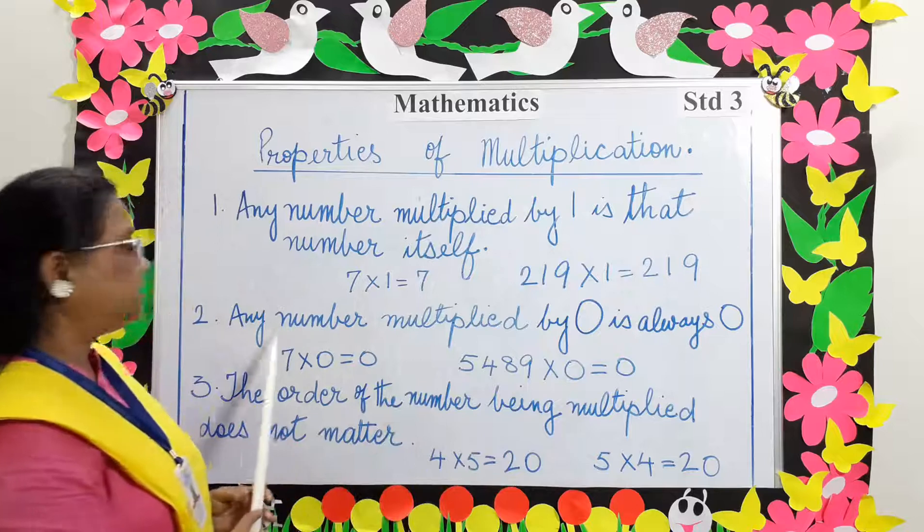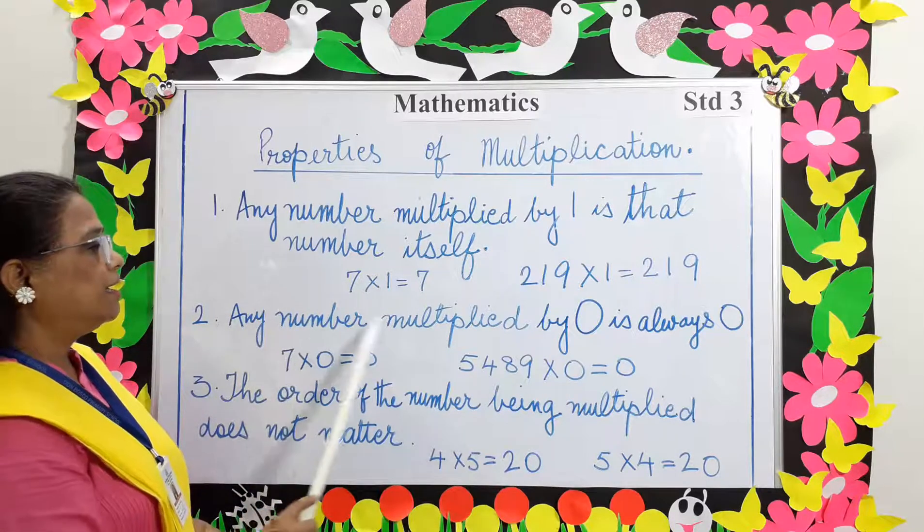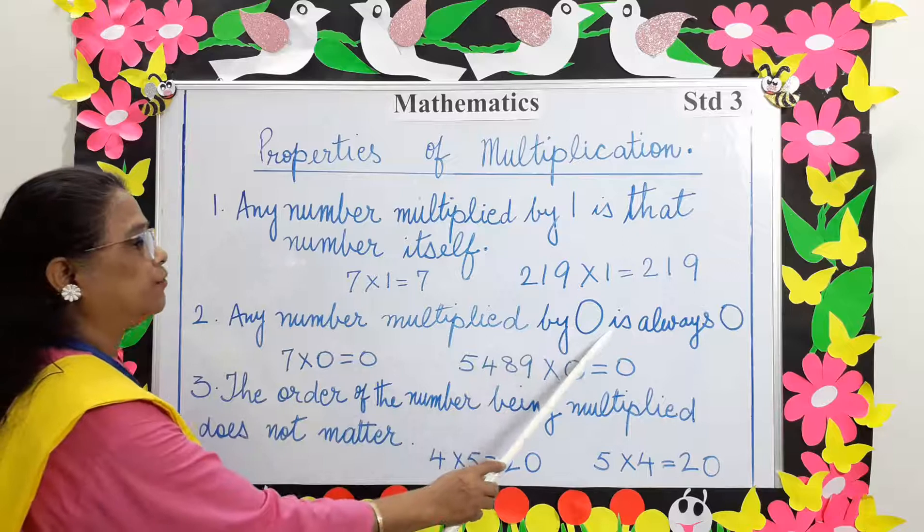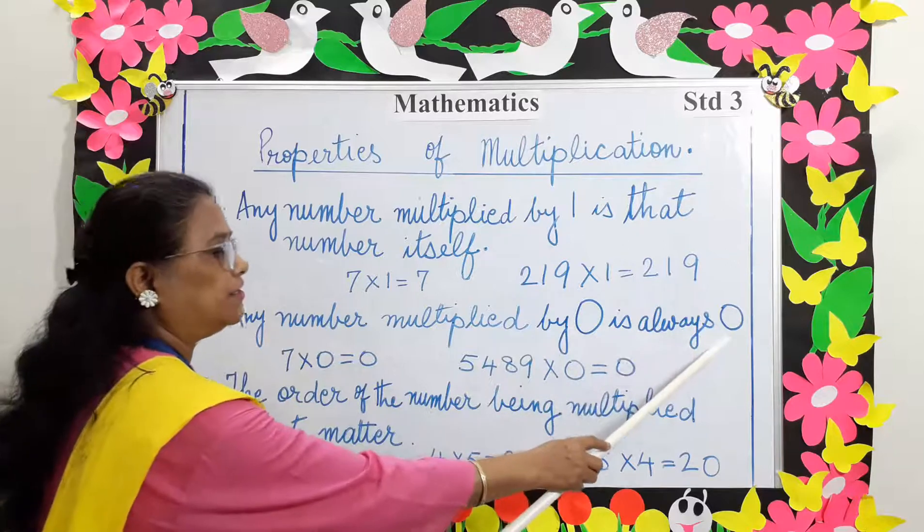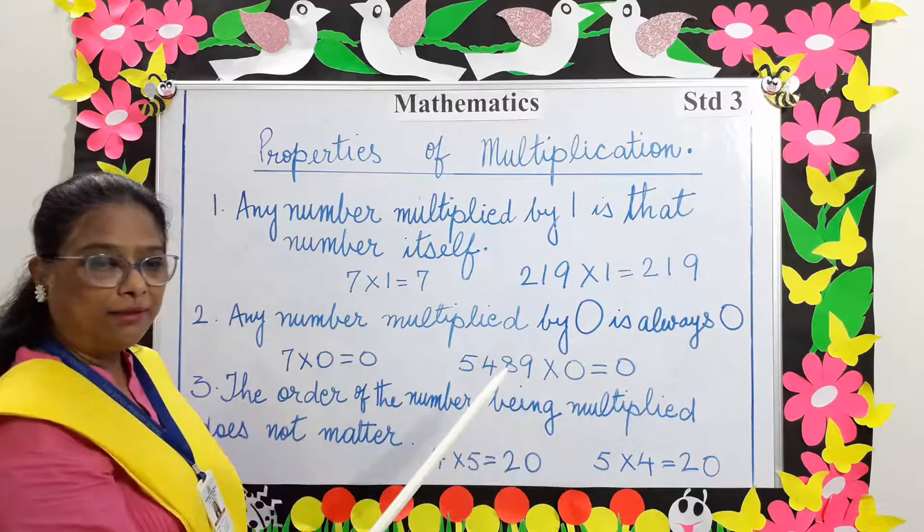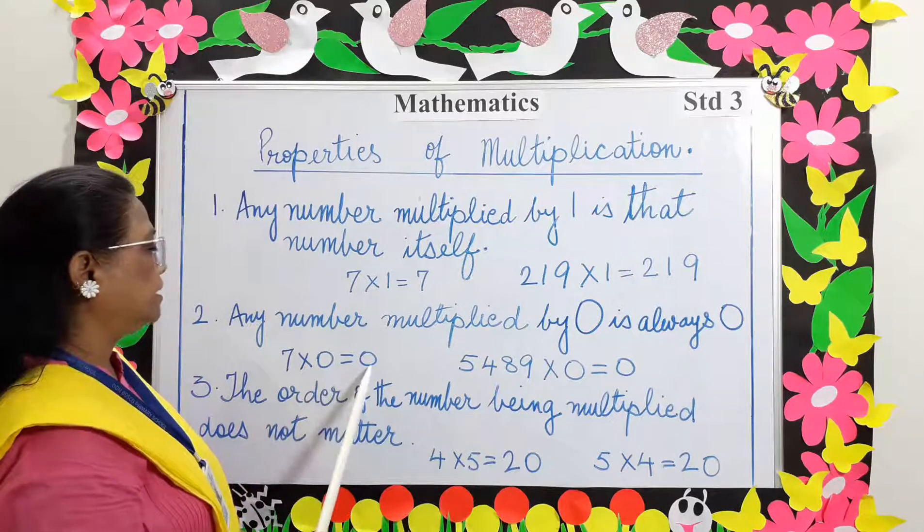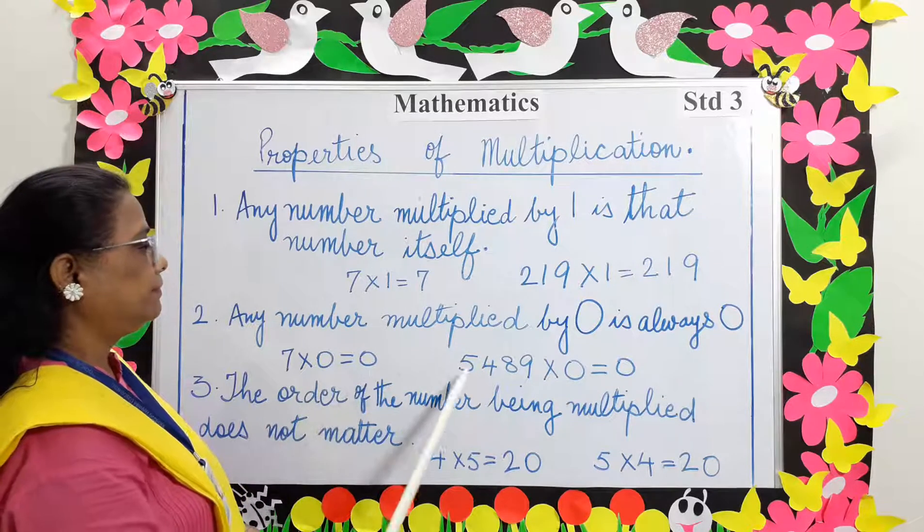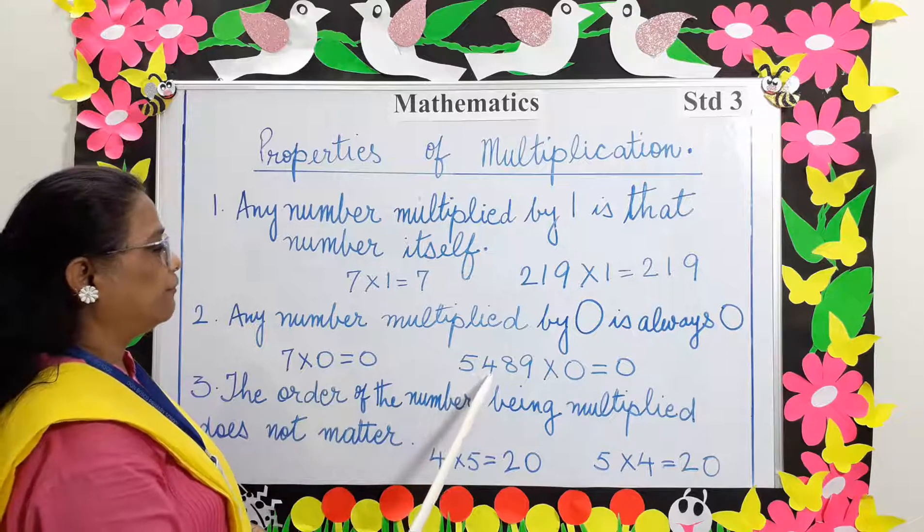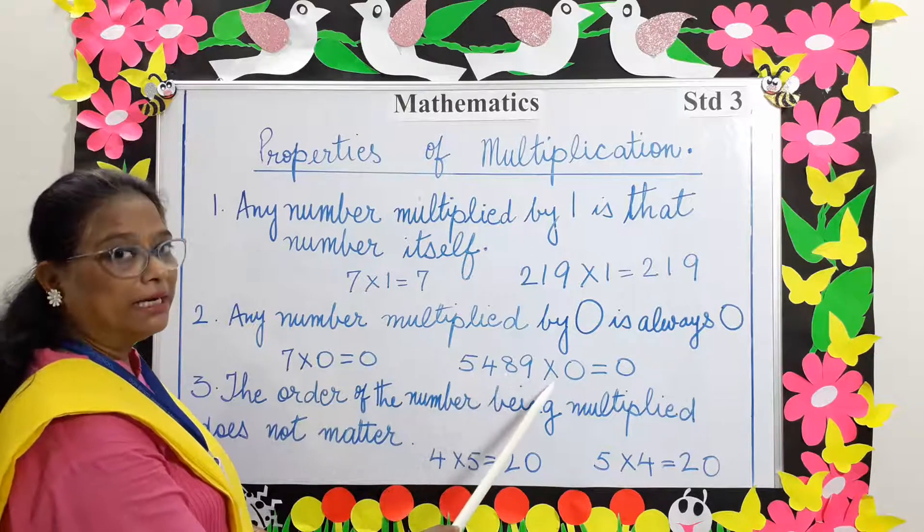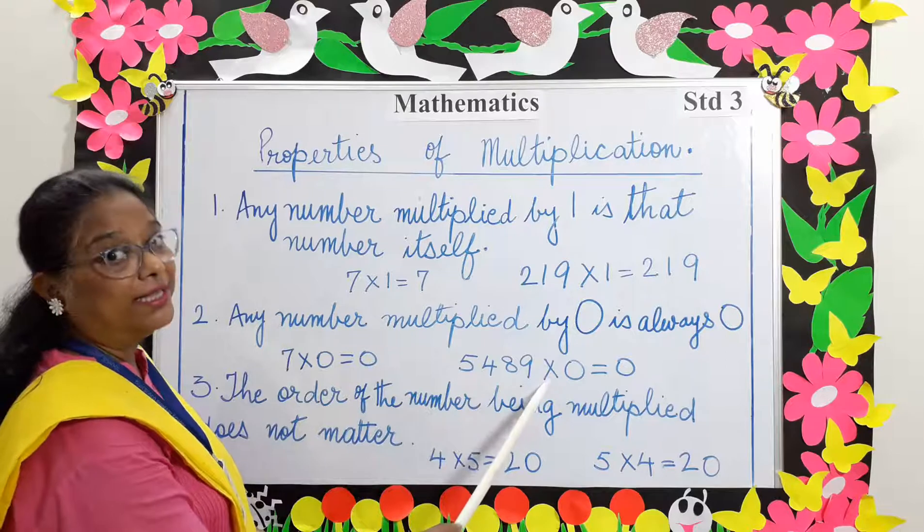Property number 2: Any number multiplied by 0 is always 0. Example: 7 multiplied by 0 equals 0. 5489 multiplied by 0 is 0.